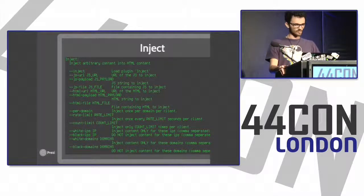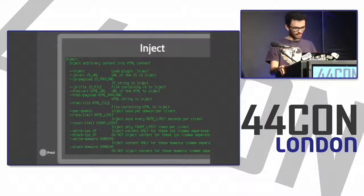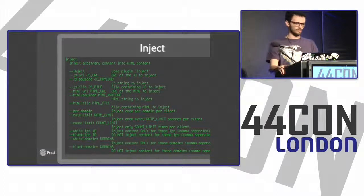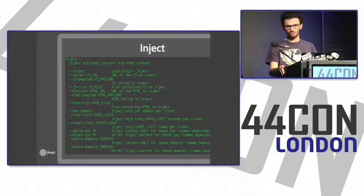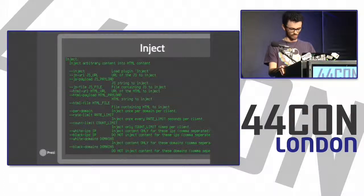Besides intercepting traffic at the network layer, you can also connect directly to MITMF using the system proxy, which is what I'll be demonstrating. The inject plugin injects anything you ever wanted into HTML. You can inject URLs — for example, a JavaScript file on a server — specifying a JavaScript payload from the command line, or a local file you want to inject.